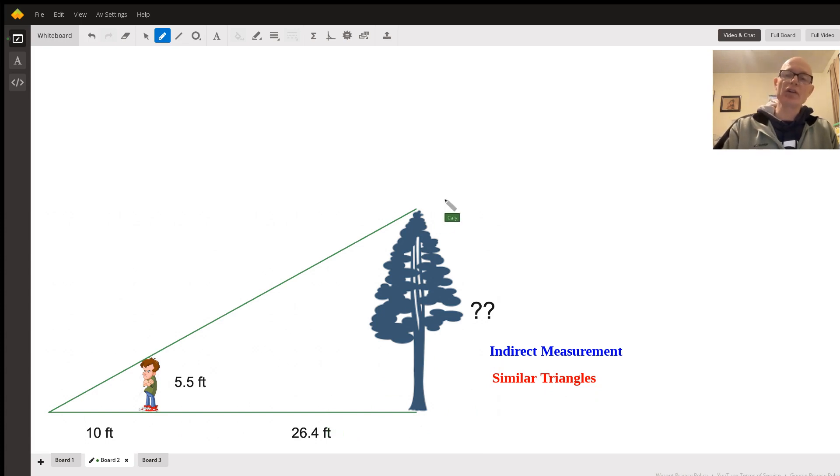Well, let's say that the sun is shining at this angle, and the tree is making this long shadow like this, and the young man is making a shorter shadow like this.